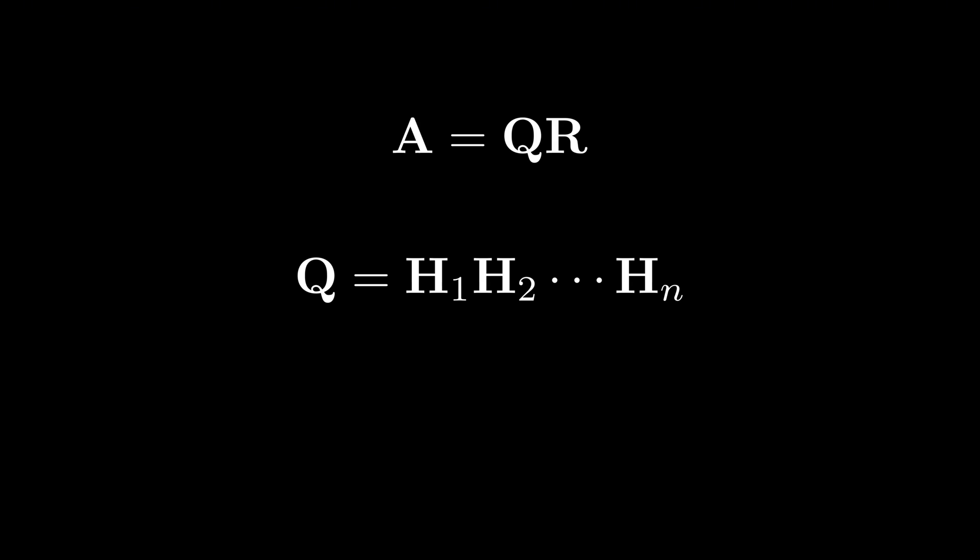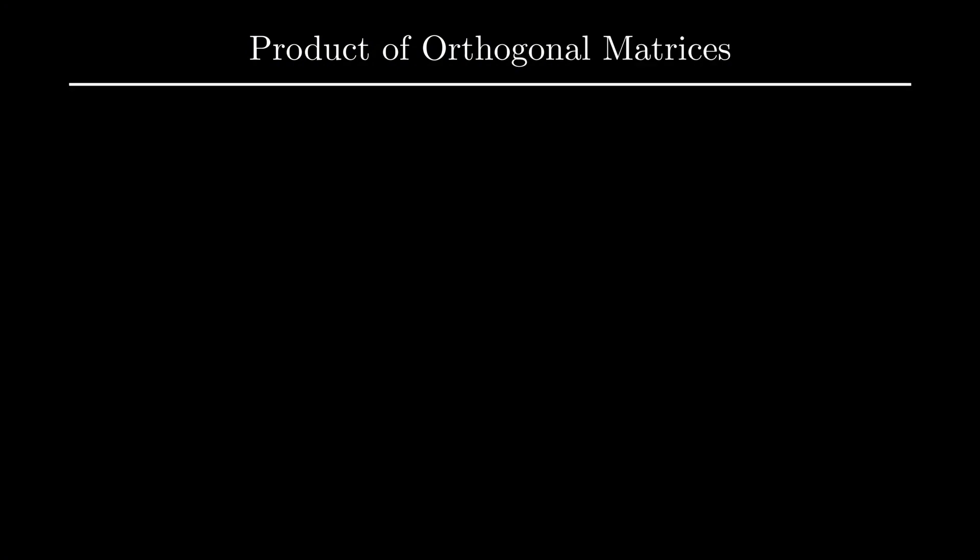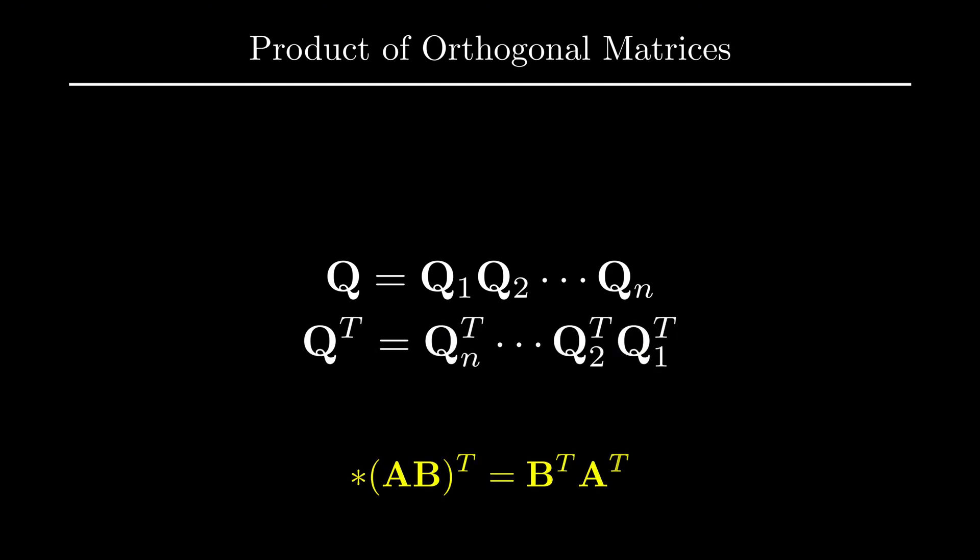So let's quickly show that the product of orthogonal matrices also produces an orthogonal matrix, since we will be assuming this fact in the next video. Say we have a matrix Q that is formed by multiplying a bunch of orthogonal matrices. Now Q transpose will be all of these orthogonal matrices transposed, but in the opposite order, due to this property right here.